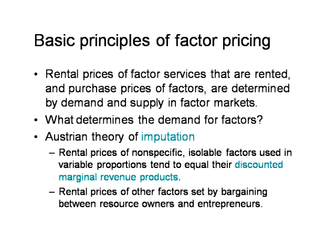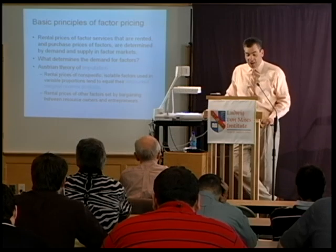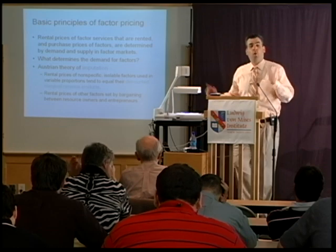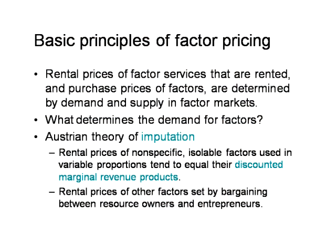The theory of imputation tells us that the rental prices of particular factors of production — non-specific, isolable factors used in variable proportions — tend to equal what we call their discounted marginal revenue products. The rental prices of other factors of production are determined by bargaining between resource owners and entrepreneurs. Factors that are not non-specific, isolable, and used in variable proportions have their prices determined by bargaining among resource owners and entrepreneurs.